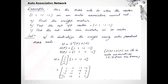The example for the auto-associative network: use the Hebb rule to store the vector [1, 1, -1, -1] in an auto-associative neural network. We need to find: first, the weight matrix; second, test with the net input vector [1, 1, -1, -1]; and third, test the network with one mistake in the input vector, where we change one value in [1, 1, -1, -1].